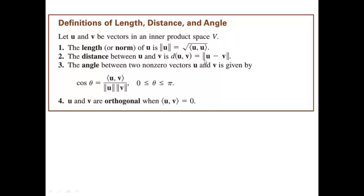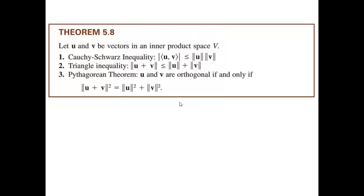Secondly, the distance between U and V is the norm of (U − V) — and when solving this, do not forget to use the definition of the inner product given in that particular case. Thirdly, the angle between two nonzero vectors U and V satisfies cos θ = ⟨U, V⟩ / (‖U‖·‖V‖). In Lecture 24 we had U·V in the numerator, but now we use the general inner product notation. Two vectors U and V are orthogonal if their inner product equals zero.